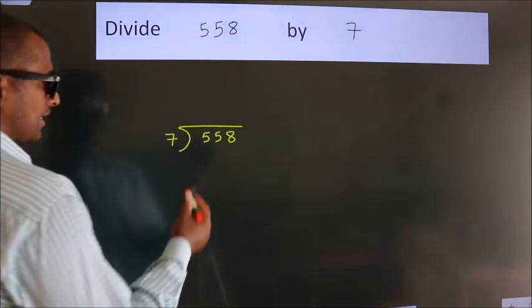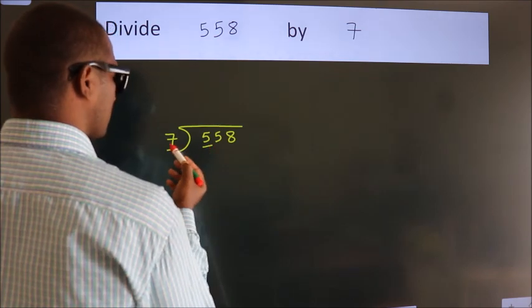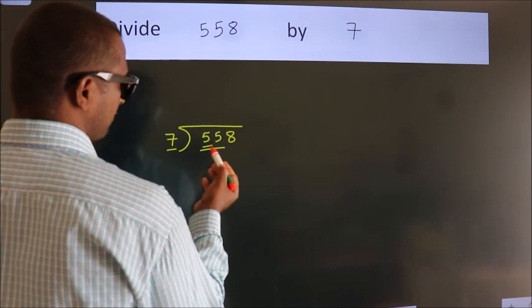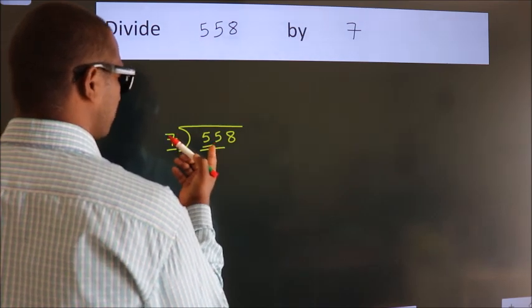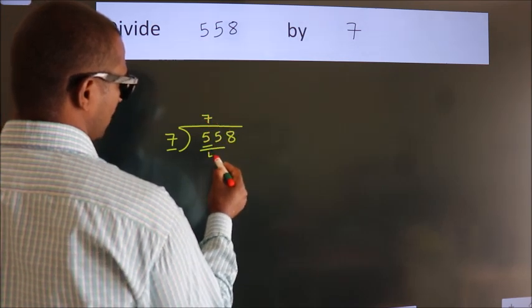Next. Here we have 5, here 7. 5 smaller than 7, so we should take 2 numbers: 55. A number close to 55 in 7 table is 7 sevens, 49.